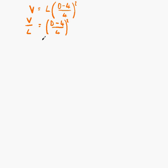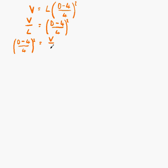We want D as the subject of our formula. What we can do is flip the sides so that D is on the side we want it to be on. If V over L equals D minus 4 over 4 all squared, then D minus 4 over 4 all squared is equal to V over L.